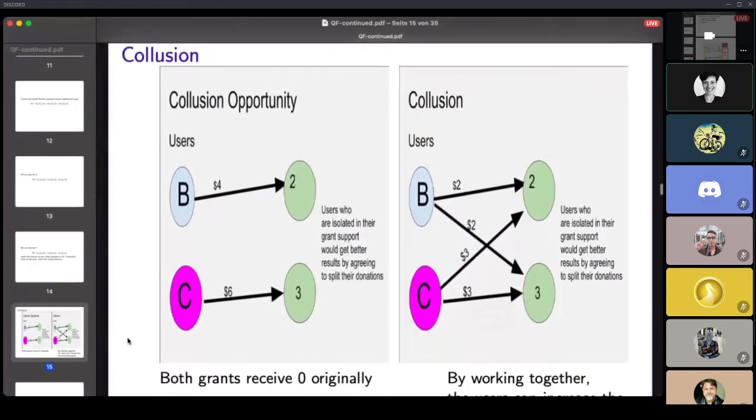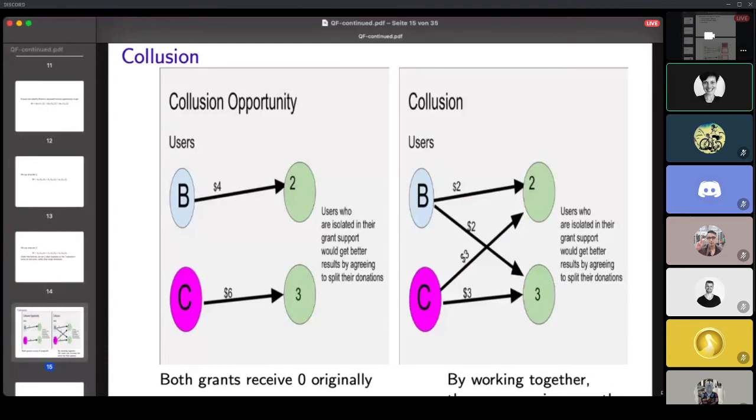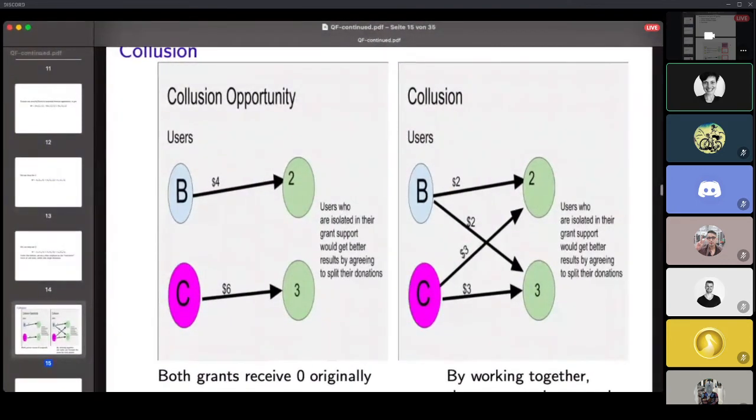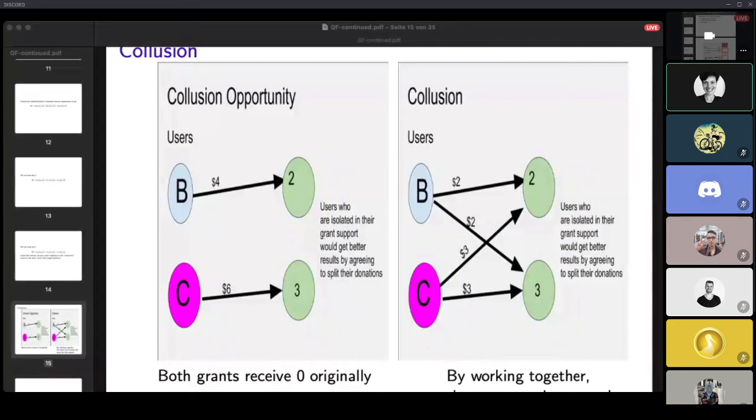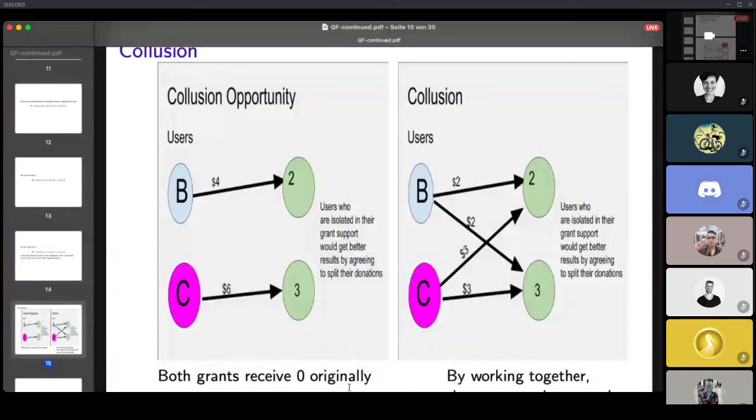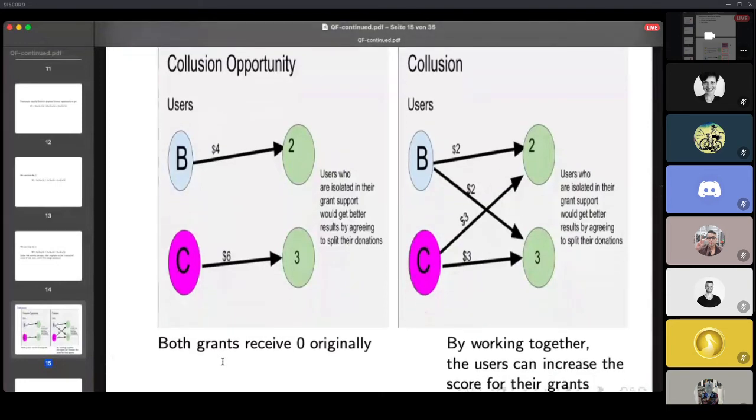We talked last time about the problem that B could just fund themselves. The other problem we considered was collusion, where maybe B and C were originally trying to fund their own project. They would not get any money under the new formula, but if they talked to each other and tried to split up their donations amongst the projects, then they would be able to get money. And so this is also undesirable because it's basically just gaming the system in a different form.